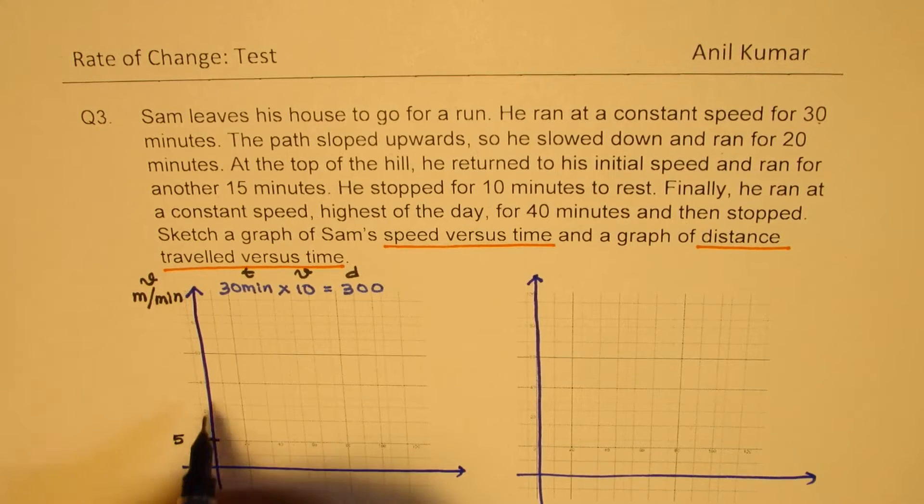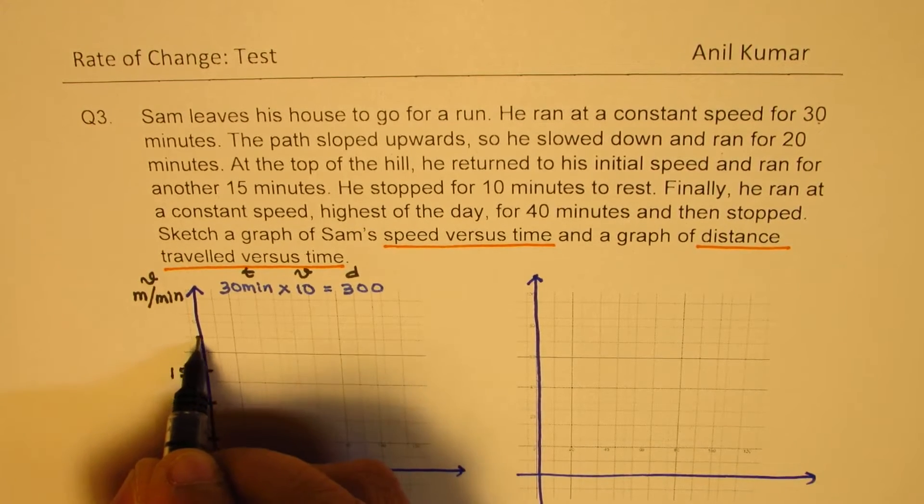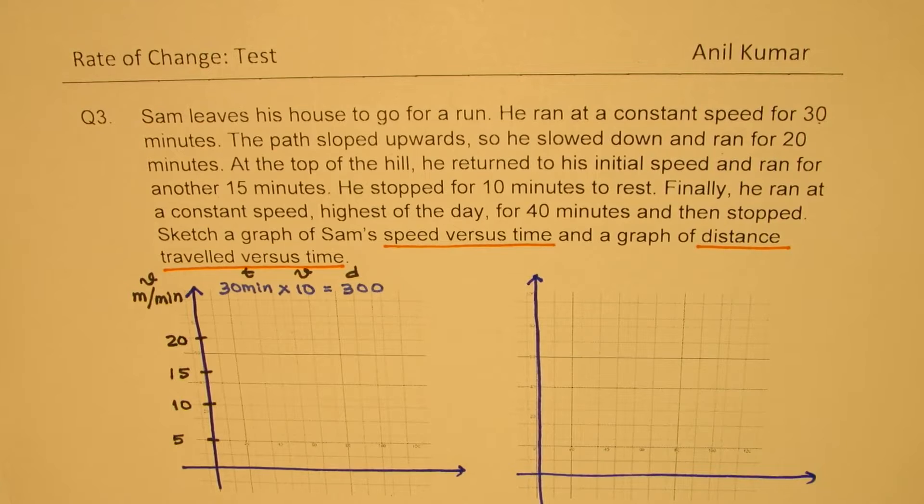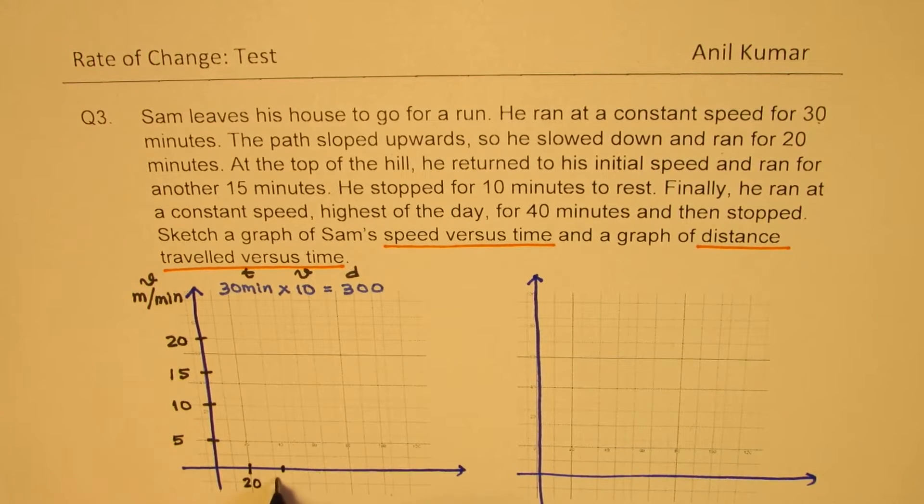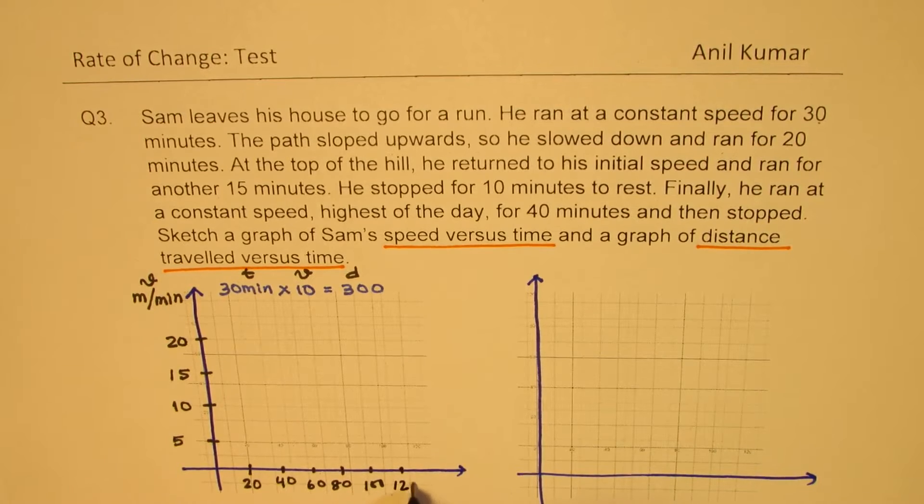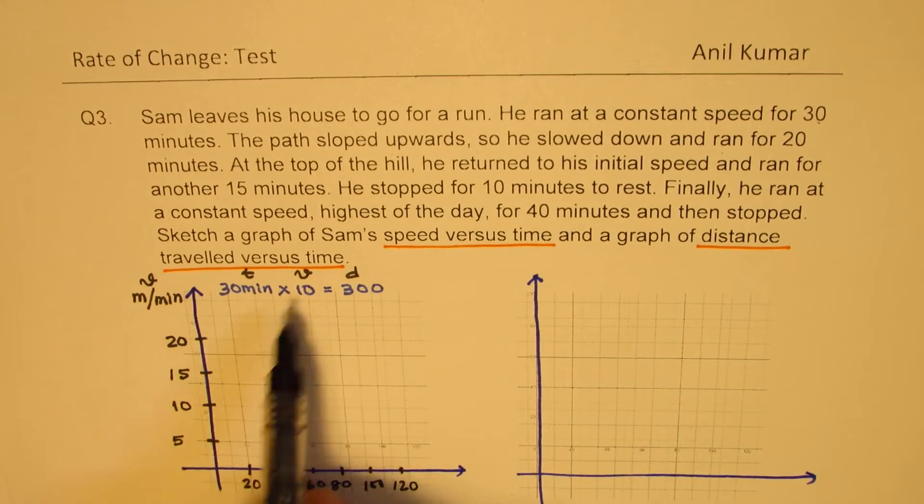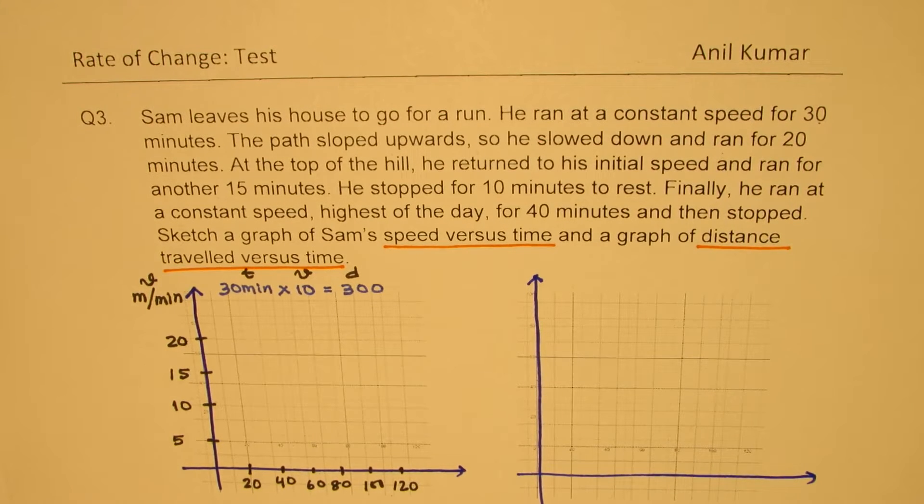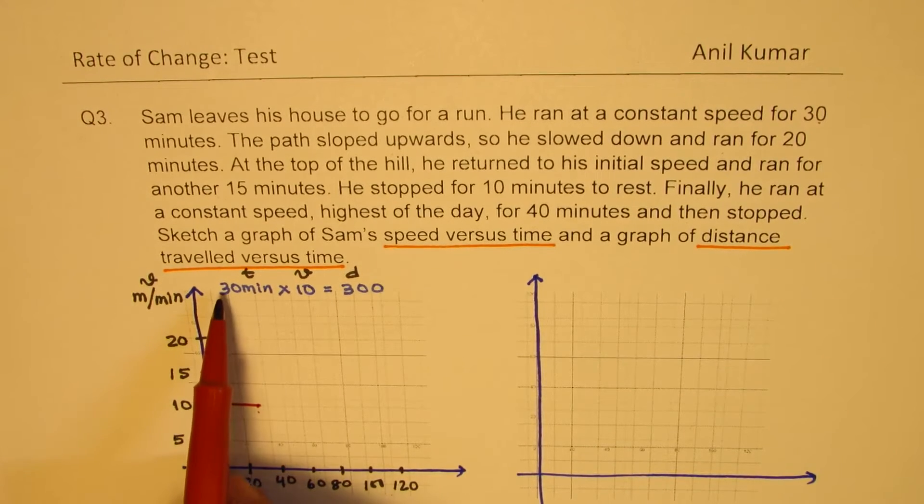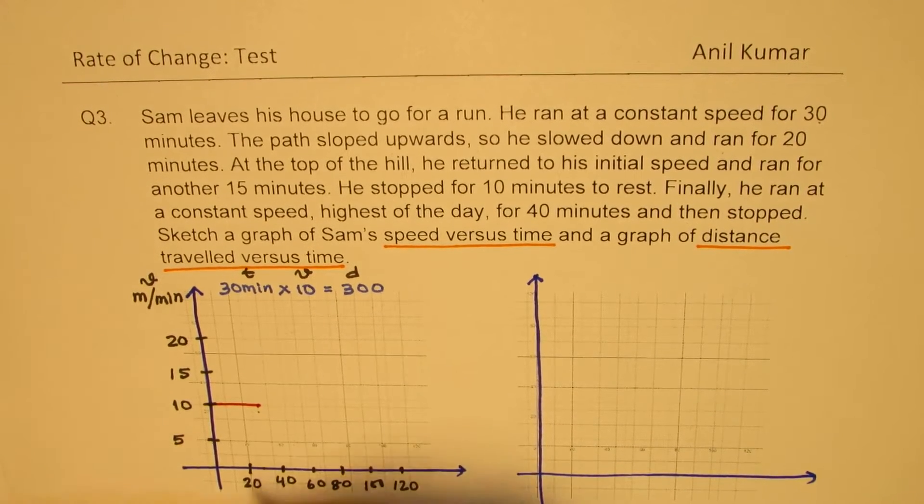So what we have assumed here is that the velocity is in meters per minute. We are taking 10 as our velocity. So we'll take a scale which is like 5, 10, let's say this is 15 and 20, and for 30 minutes. So on this side let's take a scale which is like 20, 40, 60, 80, 100, 120. So when I say in 30 minutes he runs with a constant speed of 10, on the graph it will be a horizontal line. So this is 30 for us so it will be a horizontal line. That is the constant speed for 30 minutes. So this is at 30.